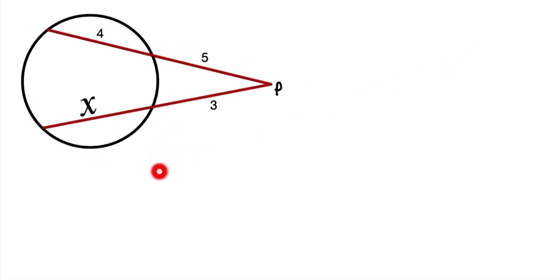So this is our question and this one is a circle. This one is the chord, the length of the chord is given as 4, and the external length is 5, and this external length is 3, and we have to find the length of this chord x.